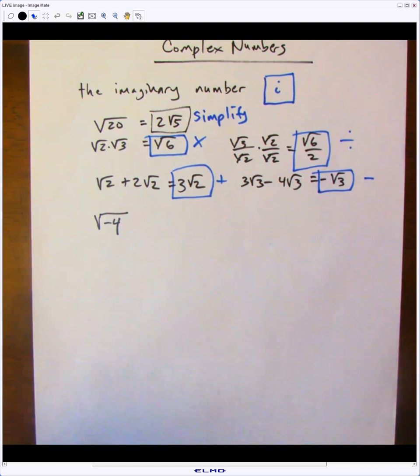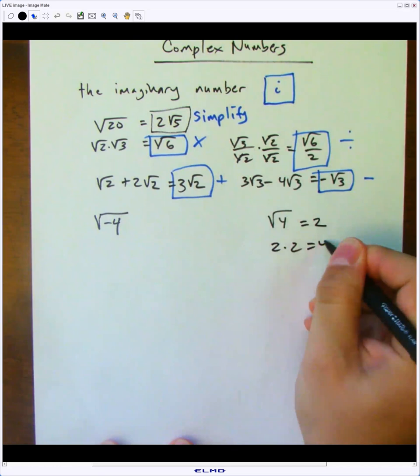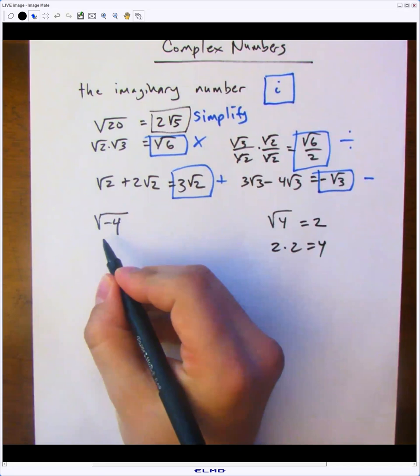Well, if we look at the square root of 4, we know the answer is 2. Why? Because 2 times 2 equals 4. However, what about the square root of negative 4? There's nothing times itself that will give us negative 4.